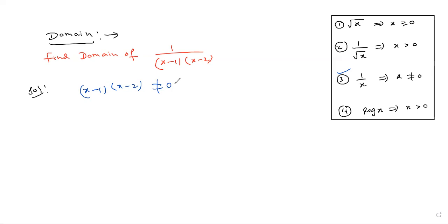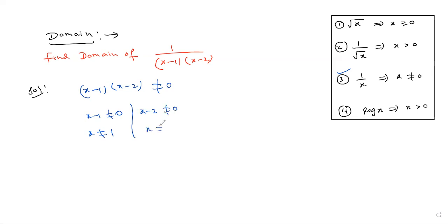So x minus 1 times x minus 2 is not equal to 0. Then x minus 1 not equal to 0 gives x not equal to 1. And x minus 2 not equal to 0 gives x not equal to 2.